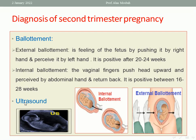Internal ballottement can be done through the vagina by a finger pushing on the head of the baby upward. The baby will go up then return back to the finger again. At the same moment, if you put the other hand on the abdomen, you can also receive the fetus while doing internal ballottement vaginally. Ultrasound is diagnostic and you can see the fetal head, trunk, limbs, and the pulsation of the fetal heart, and comment on the anatomy, detect the expected date, and also comment on the placenta and amniotic fluid.